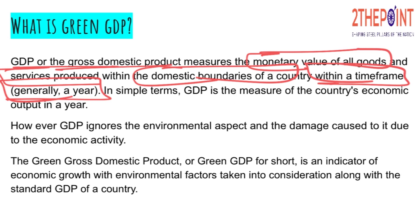However, while calculating the GDP, we do not consider the environmental aspect of it — the damage caused by the production process to the environment. For example, discharge of effluents into the river, or deforestation — cutting down trees to lay out factories. So there comes this concept of Green GDP.